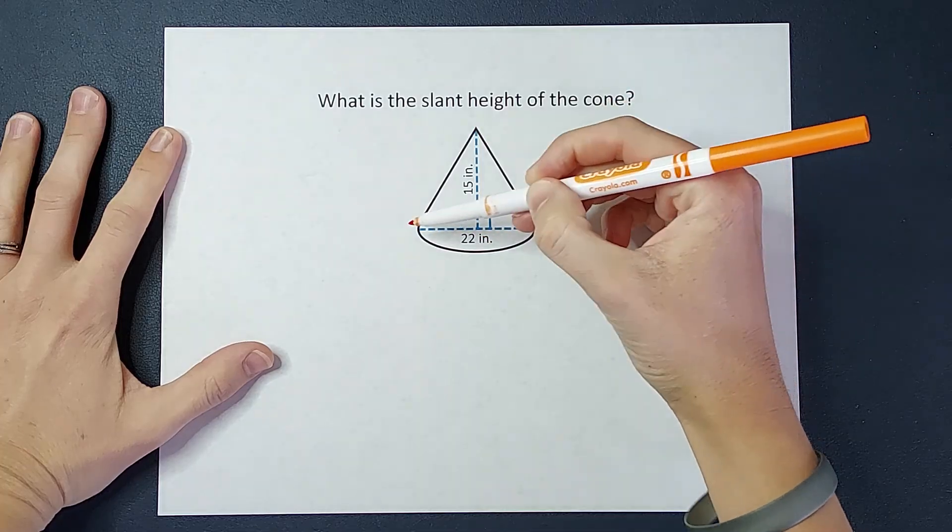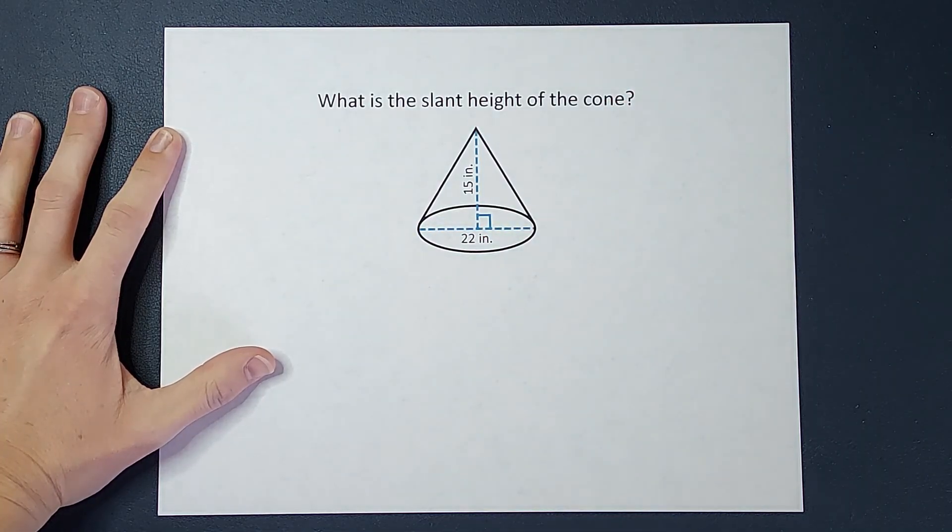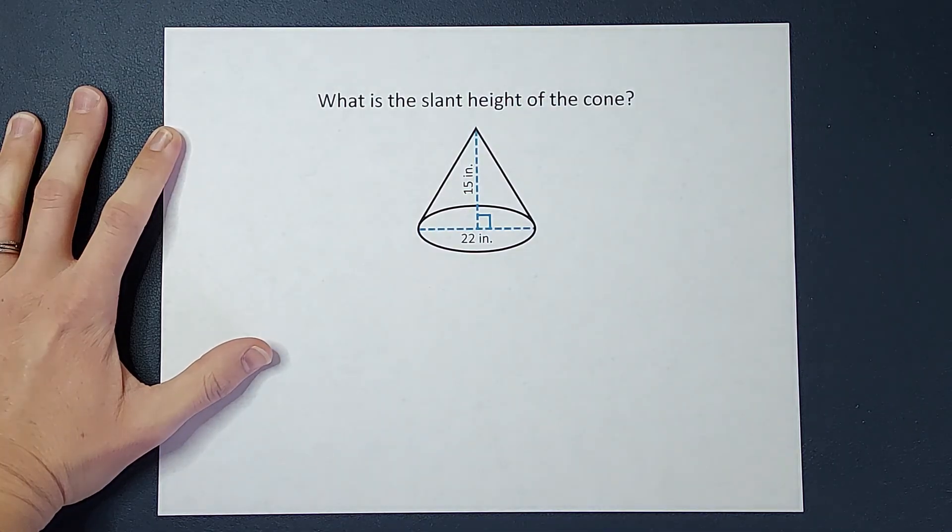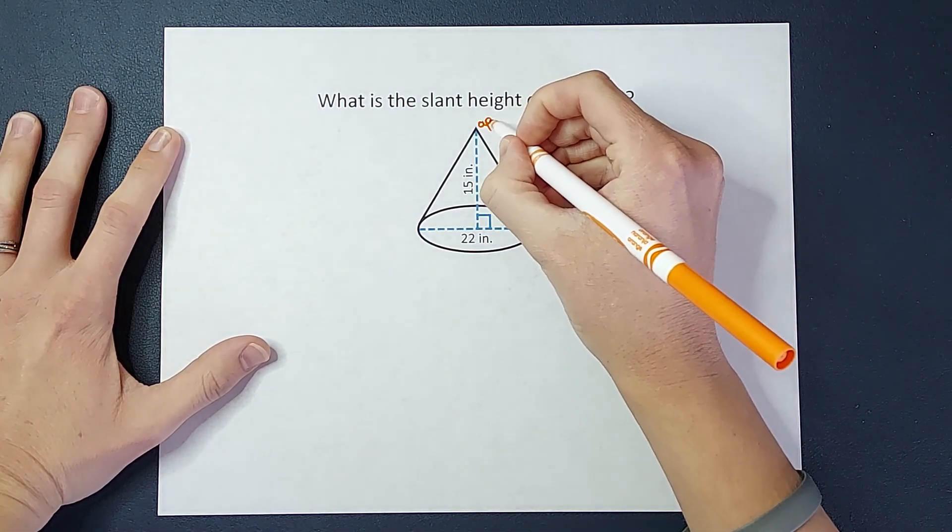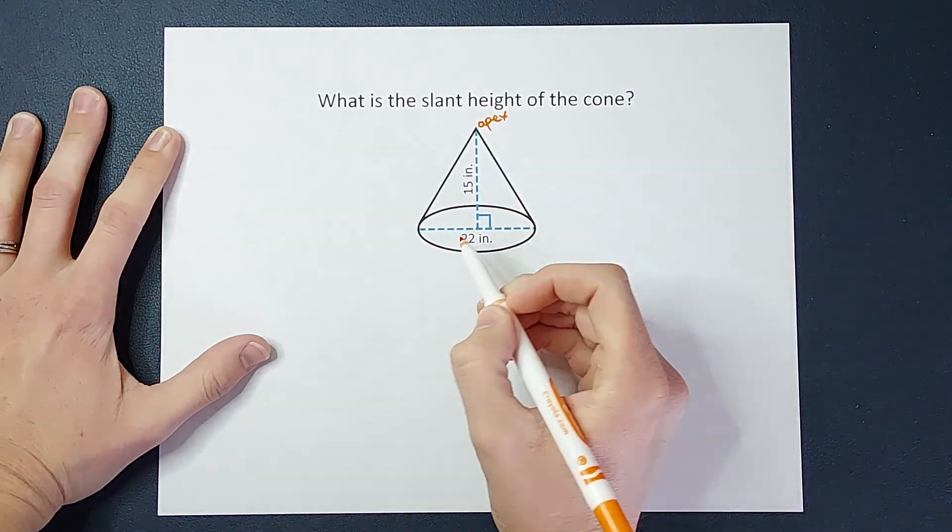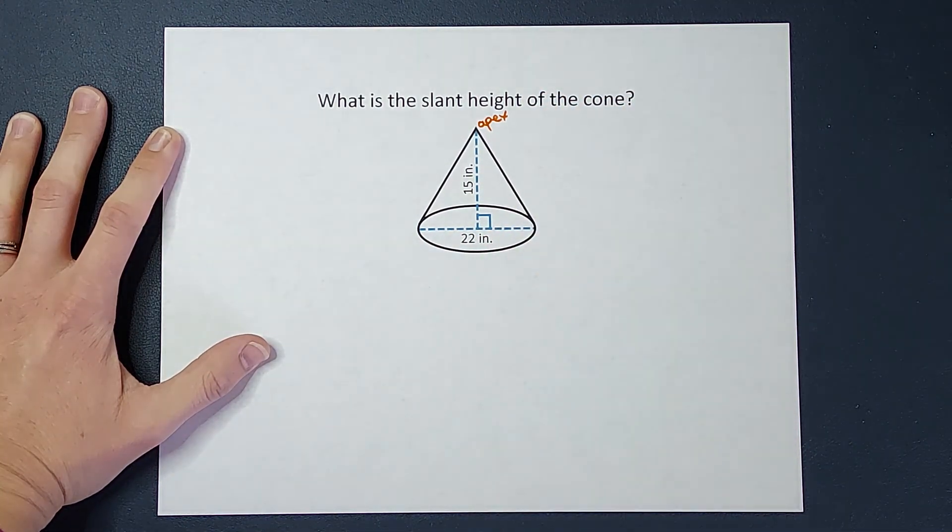So these blue lines aren't really a part of the shape itself, but they're showing us the lengths. They're showing us from, this is called the apex, this top point up here, from the apex to the bottom of the cone, and then across the bottom of the cone.